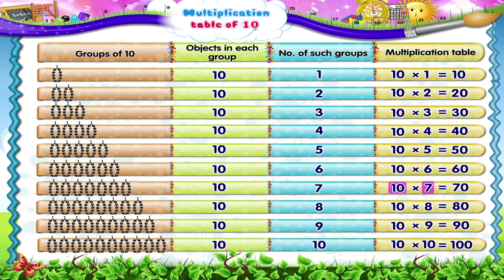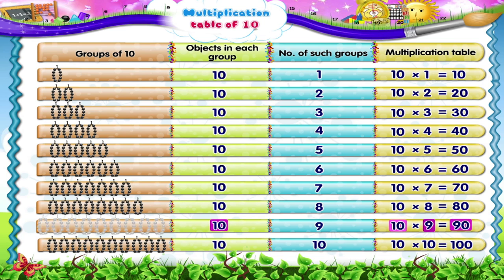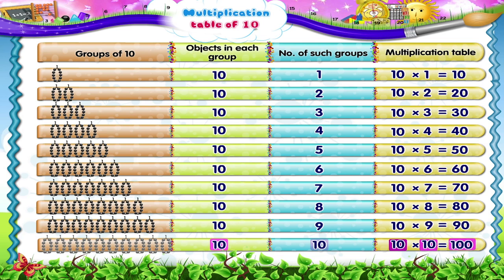10 sevens are 70 means a group of 10 taken seven times. 10 eights are 80 means a group of 10 taken eight times. 10 nines are 90 means a group of 10 taken nine times. 10 tens are 100 means a group of 10 taken 10 times.